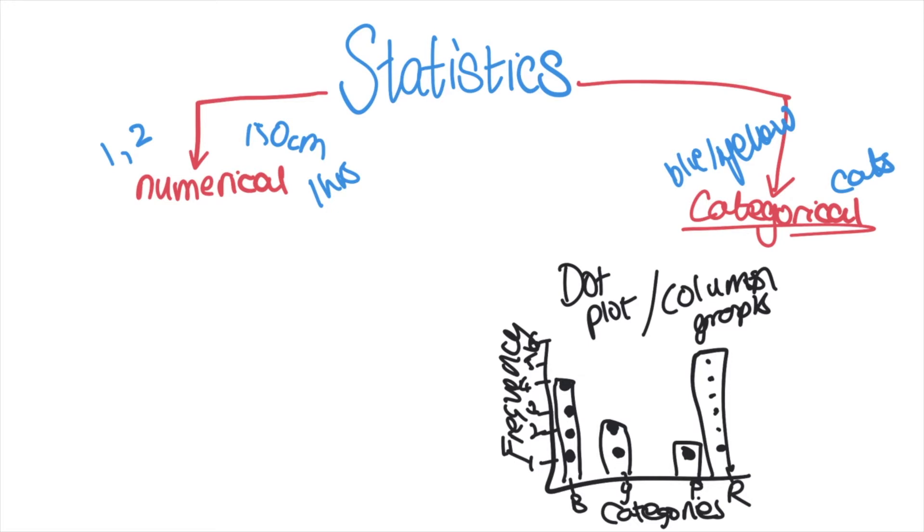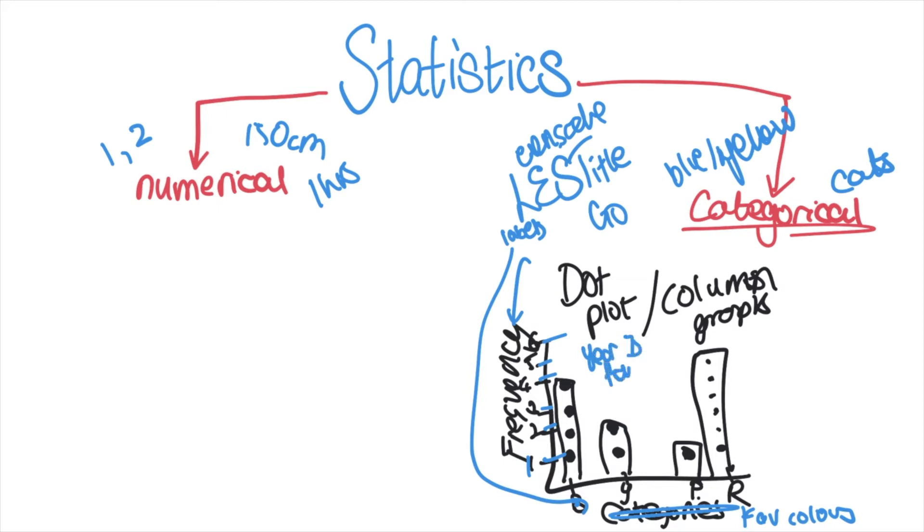A very important thing to remember to get full marks in your graphs is you have to use LET'S GO. L stands for labels - you need to label both axes, frequency going up and your categories, maybe favorite color or weather, so be very specific. E-S stands for even scale. When you've got your dots and columns it needs to be evenly spread out. You don't have a scale going 1, 7, 10 - that's not an even scale. You need to count up in ones or twos or threes. And the last one's a title - you need to label your graph, so maybe Year 7's favorite colors.